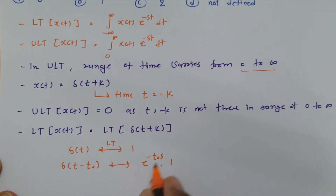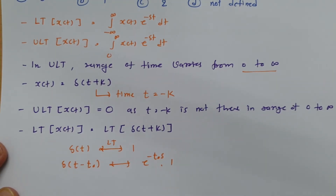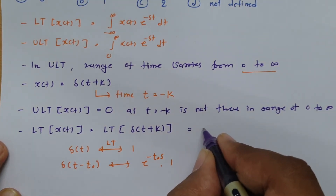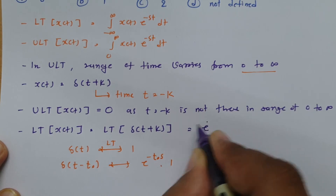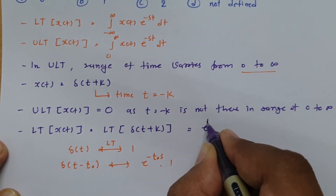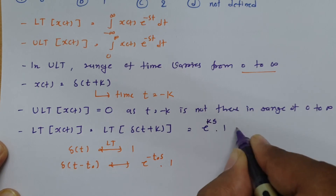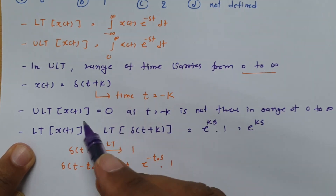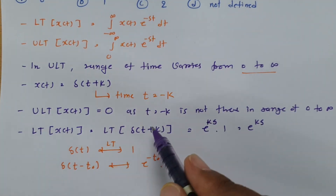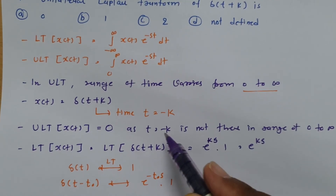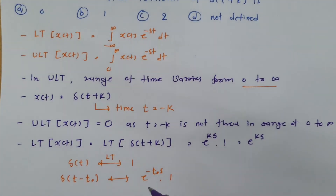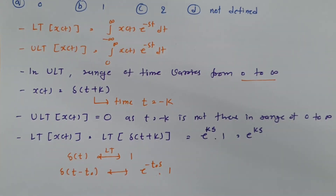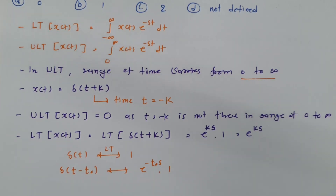So the Laplace transform of δ(t+k) becomes e^(−(−k)s) · 1, which equals e^(ks). This result applies to the bilateral Laplace transform. However, for the unilateral Laplace transform, the answer must be 0, since t = −k does not come in the range of 0 to infinity. I hope you have understood this session — thank you for watching, and please share your valuable suggestions.